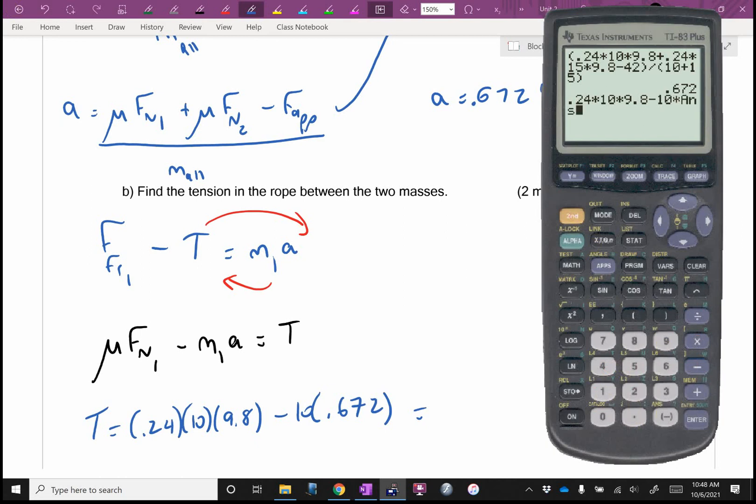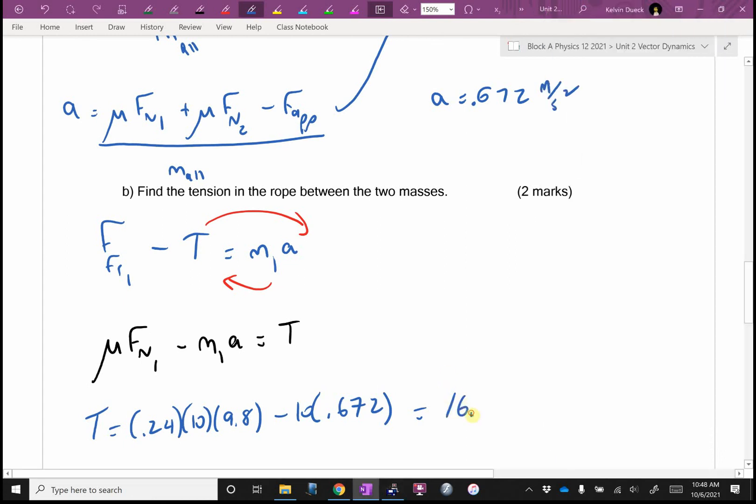So it's going to be 0.24 times 10 times 9.8 minus 10 times answer button. Did you all get a tension of 16.8? By a fluke again, the same answer as before. Is it 16.8 or am I wrong? People nodding? Yep. That's just a fluke.